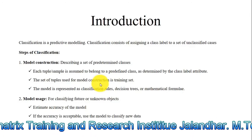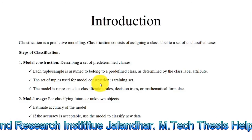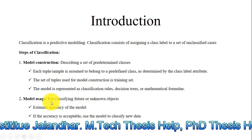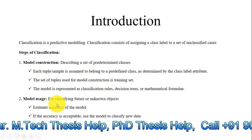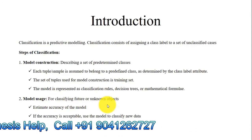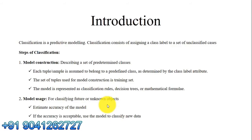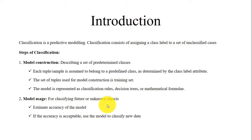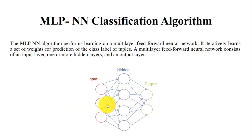That classification model is used for the prediction of unknown or future instances, or for classifying future or unknown objects. So classification consists of model construction and the usage of that model for classifying future events. Now moving towards the neural network classification algorithm — that is the multi-layer perceptron neural network classification.